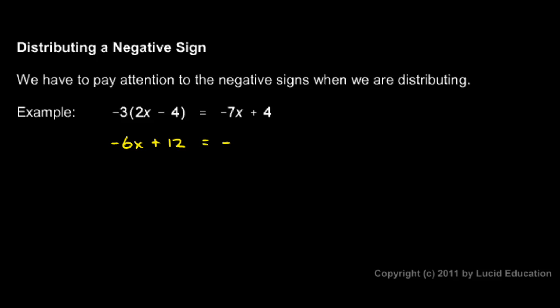On the right side, I have negative 7x plus 4. Nothing on the right side has changed. I'm going to get rid of all the x's now on one side. I can get rid of the x's over here on the right by adding 7x. Because this is a negative 7x, adding 7x will cancel that out. And if I add 7x on the right, I have to add 7x on the left.